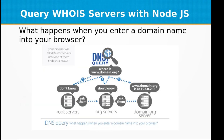So what happens when you enter a domain name into your browser? Your browser will ask different servers until one of them finds your answer. When you type domain.org in your browser, the request is sent to a domain name server and it says 'I don't know, ask them.' They forward your request to the .org servers and they say 'we don't know either.'